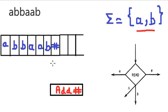The special symbol hash is used at the end of a string. If we take a Post Machine to test a string, we place hash at the end of that string. Why do we do that? So that we know where the string ends.